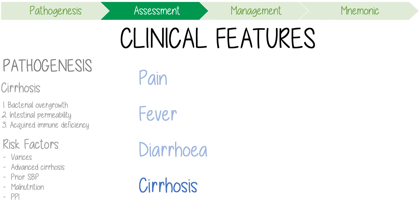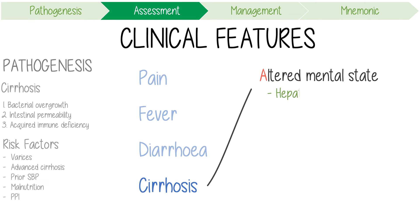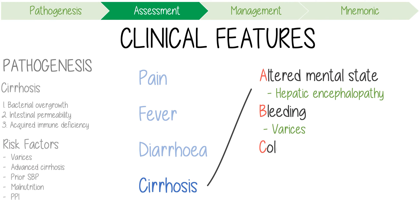Other clinical manifestations associated with decompensated cirrhosis are plentiful, but consider the following A to D features: Altered mental state from hepatic encephalopathy; Bleeding from anorectal or esophageal varices; Color change from jaundice; and Distention from the ascites.